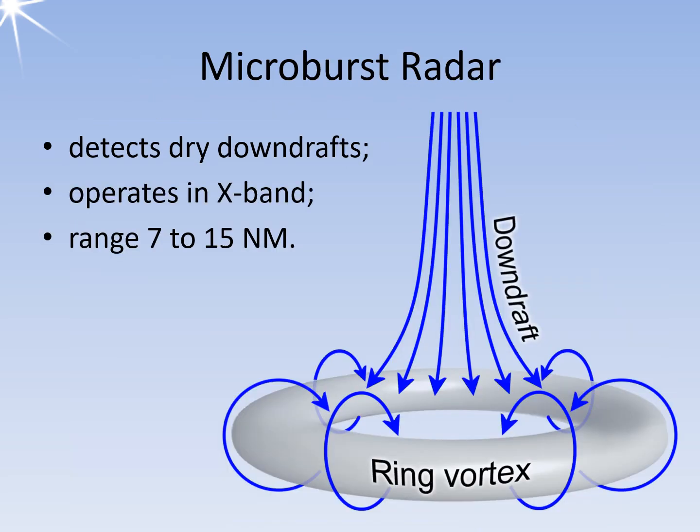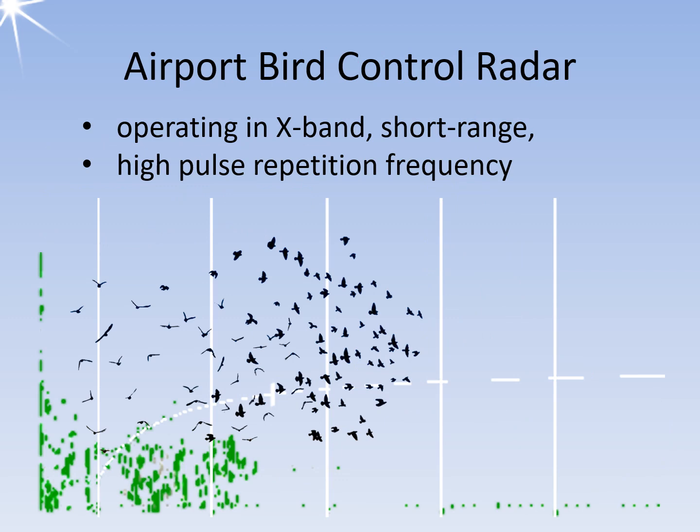Down drafts can become a hazard to aircraft during the landing approach. A vertical ring-shaped vortex first lifts the aircraft and then pushes it down. With a microburst radar, these down drafts can be detected and the landing can be aborted. Principally, every radar in the X-band can locate birds. However, when radar is used for weather or for surveillance of air traffic, the echo signals of birds are considered interference and are suppressed. A radar set up specifically for detecting birds uses special software, allowing air traffic controllers to briefly interrupt air traffic and take measures to scare away the birds.